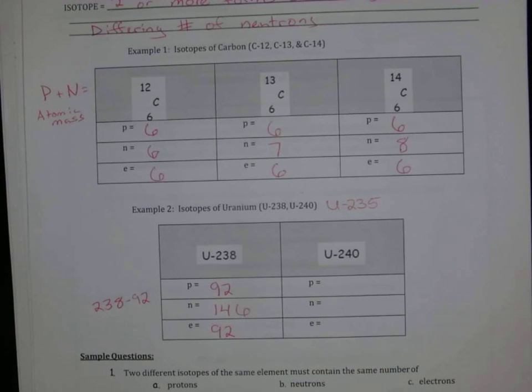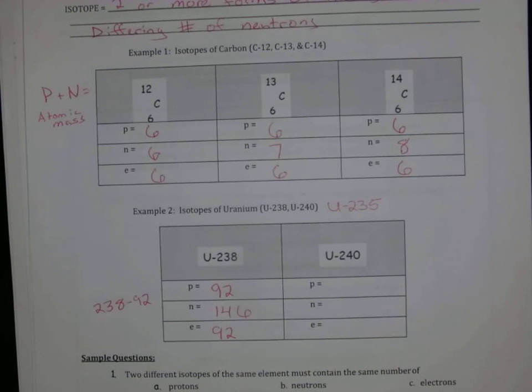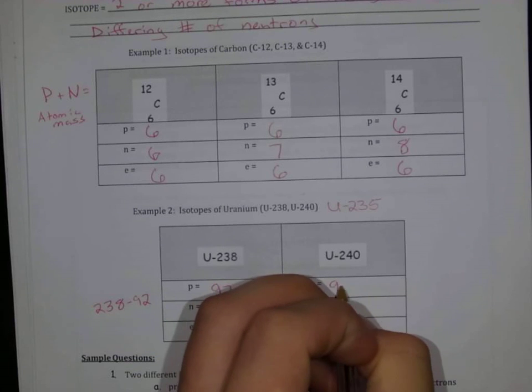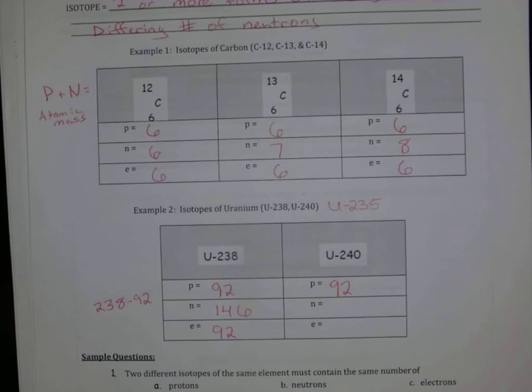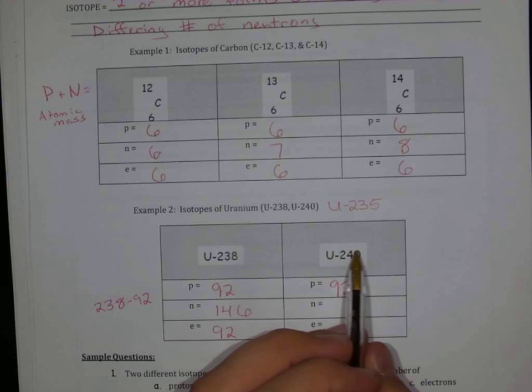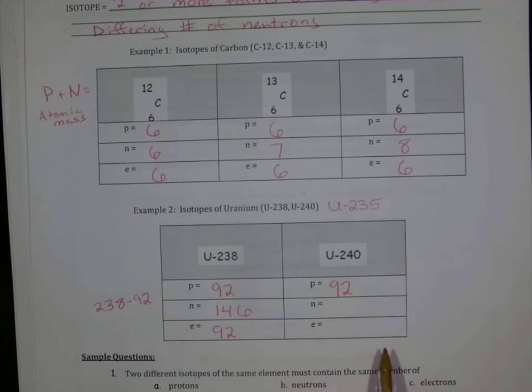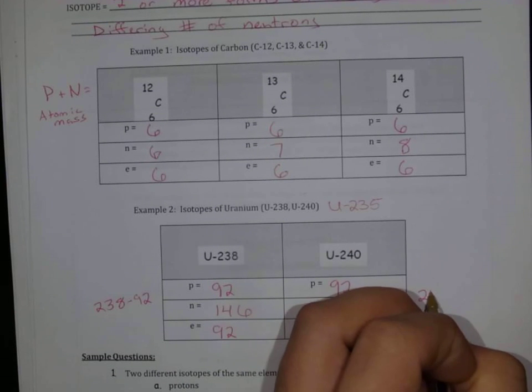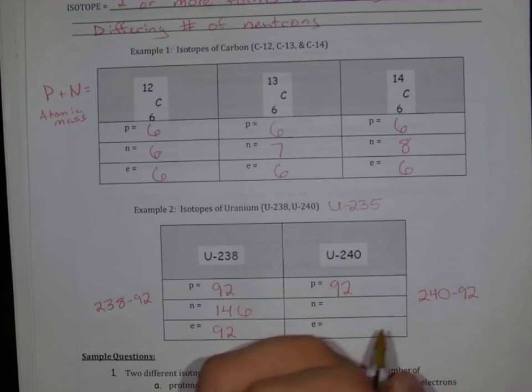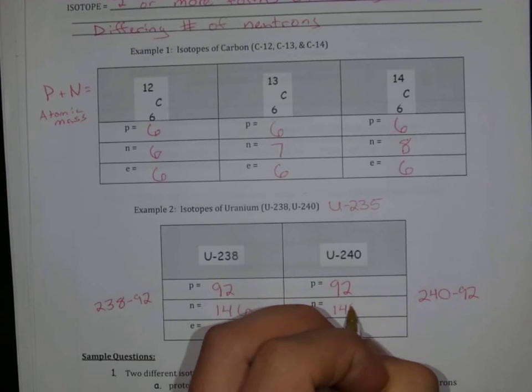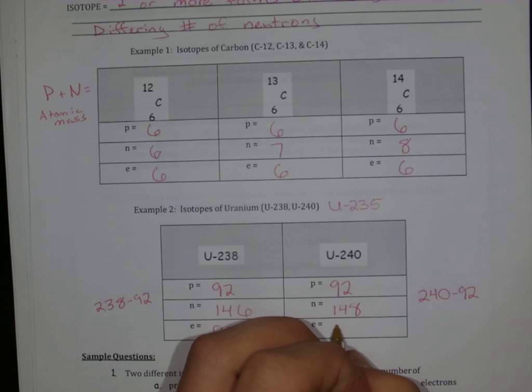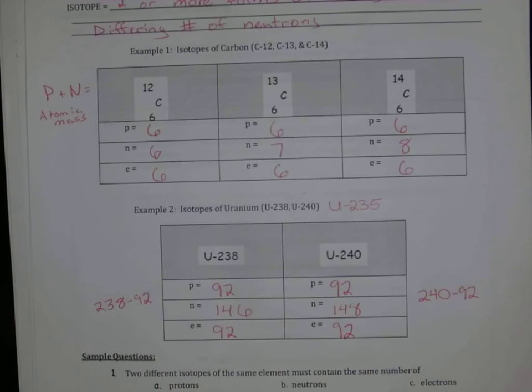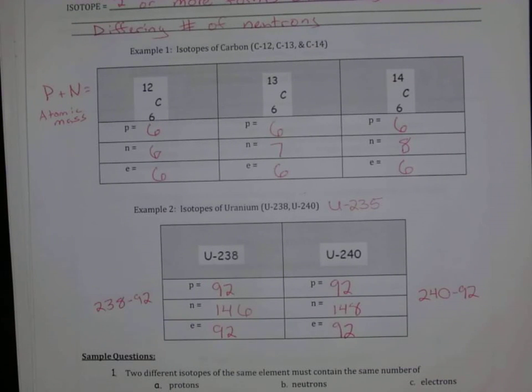So let's go through the exact same thing with my uranium-240. Again, we're going to have 92 protons because we have a uranium atom. So 92 protons, but my mass of my isotope is 240. So 240 minus 92 is 148. I have 148 neutrons in my uranium-240 isotope, and then 92 electrons. So now we should be able to go through our sample questions.